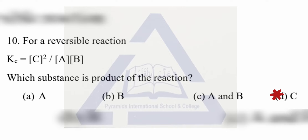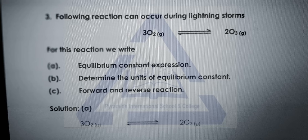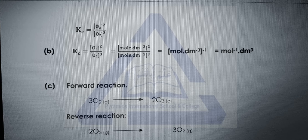Now look at question three, which is about a reaction that can occur during lightning storms. You have to write the equilibrium constant expression, determine the units of the equilibrium constant, and identify the forward and reverse reactions. For the Kc expression, write the products' concentration in the numerator and reactants' concentration in the denominator raised to the power of their moles — for example, write power 2 for ozone over its square bracket, and power 3 for oxygen over its bracket.